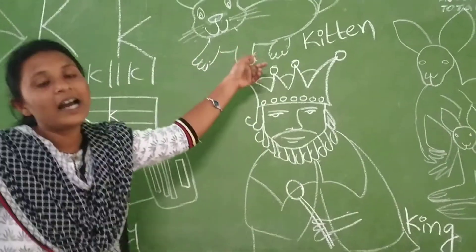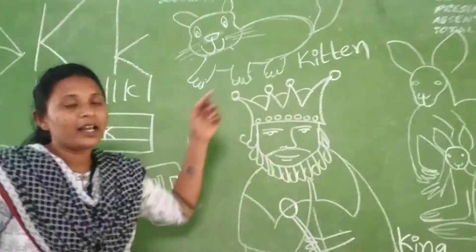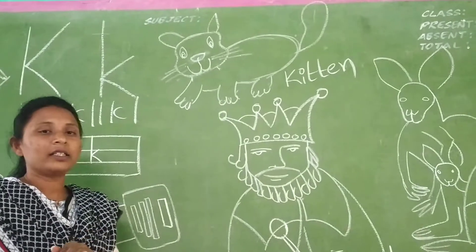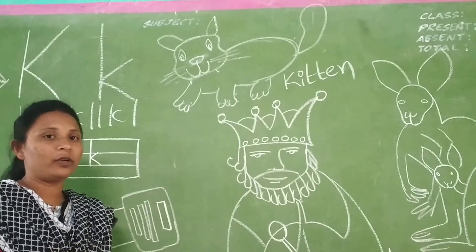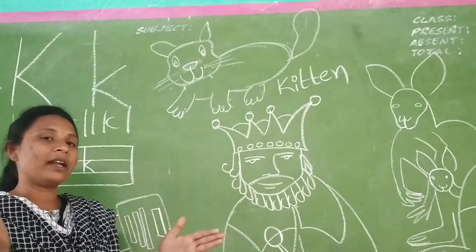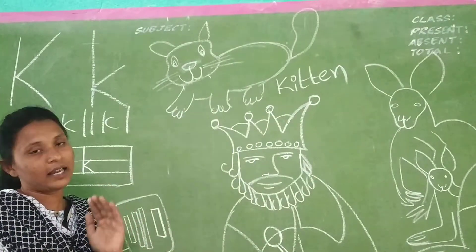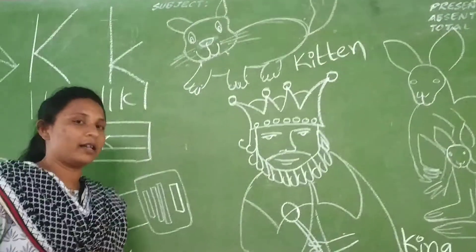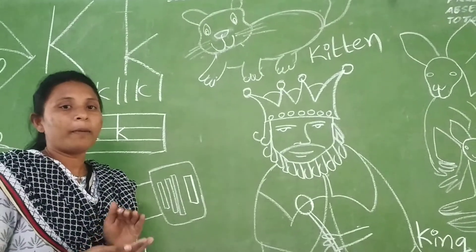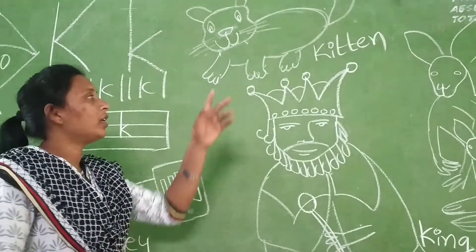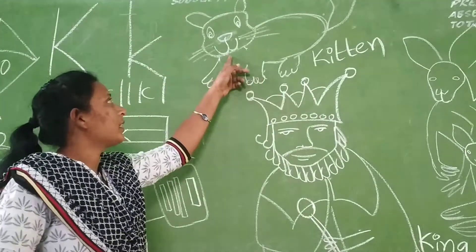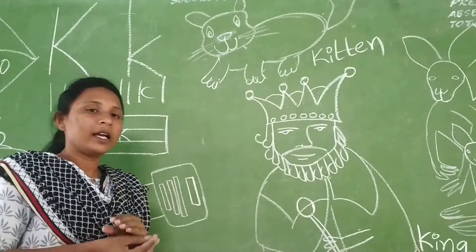And K for Kitten. Kitten is a baby — the baby of a cat. That is kitten. The small baby is kitten. The small baby of a dog is called a puppy. So that is kitten — small baby is kitten.